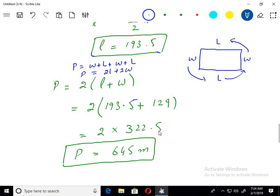Just putting the values of L and W, adding, and then multiplying by two, we get the answer of 645 meters. This is the final answer to our problem.